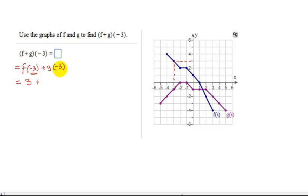Repeat the process to find g of negative 3. When x equals negative 3, go back to the graph. G is the purple graph. I'm going to go 1, 2, 3 to the left, go down, it touches the graph right there. What is that y value? Y value is negative 1. So g of negative 3 is negative 1.